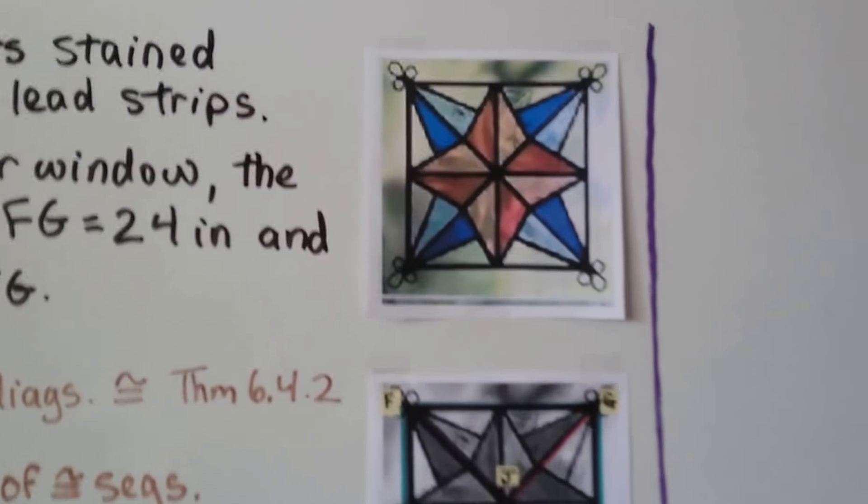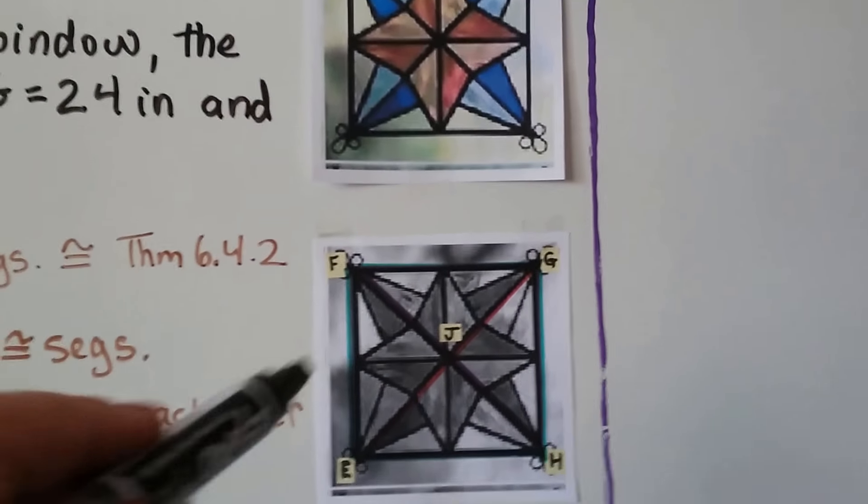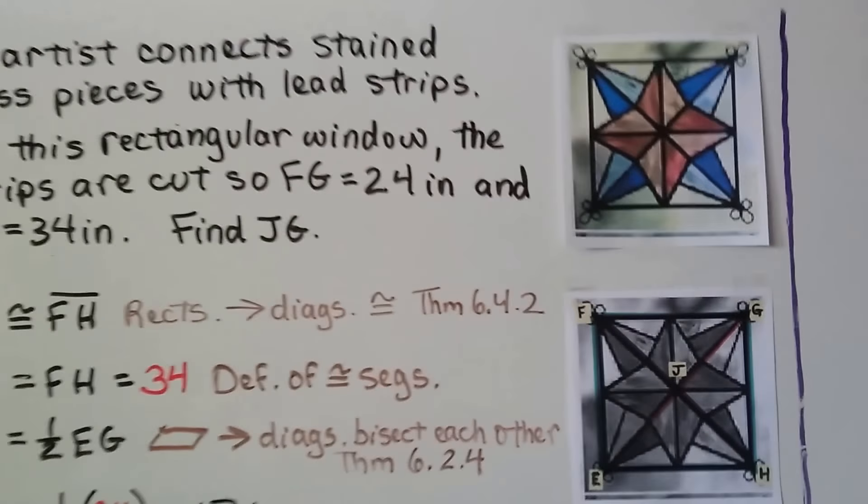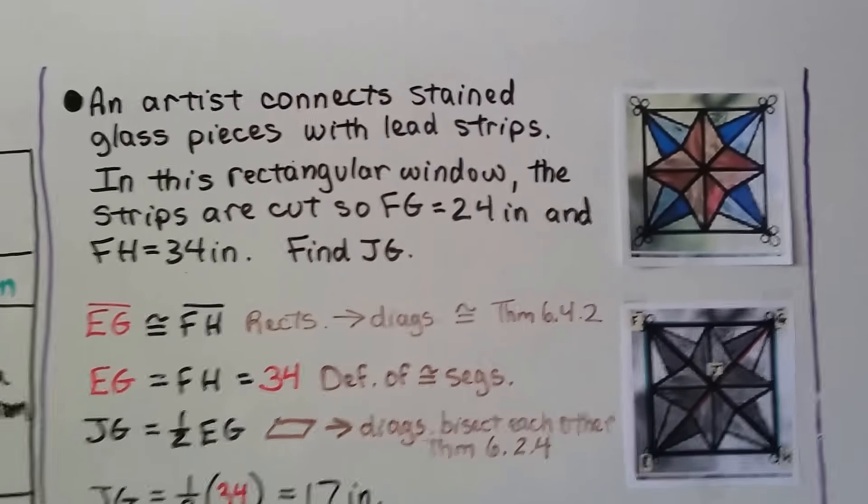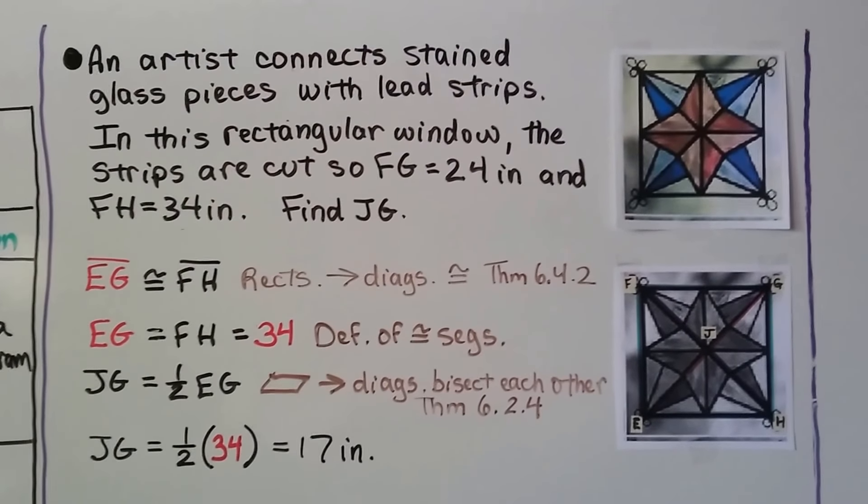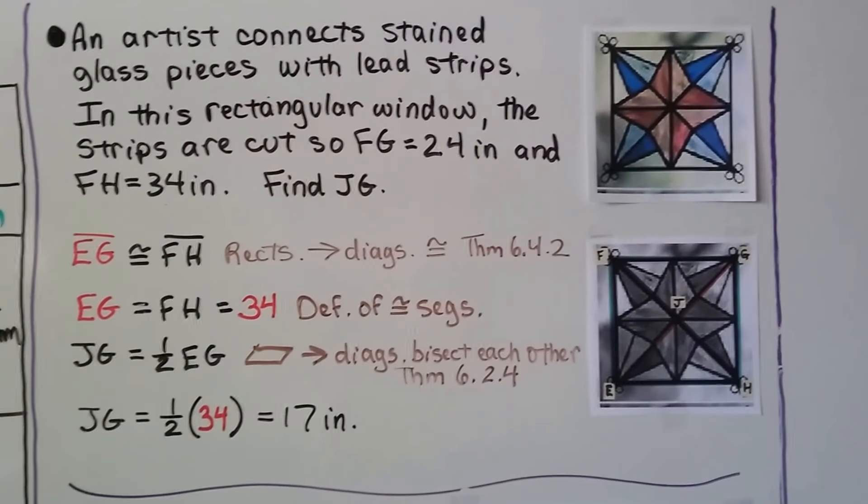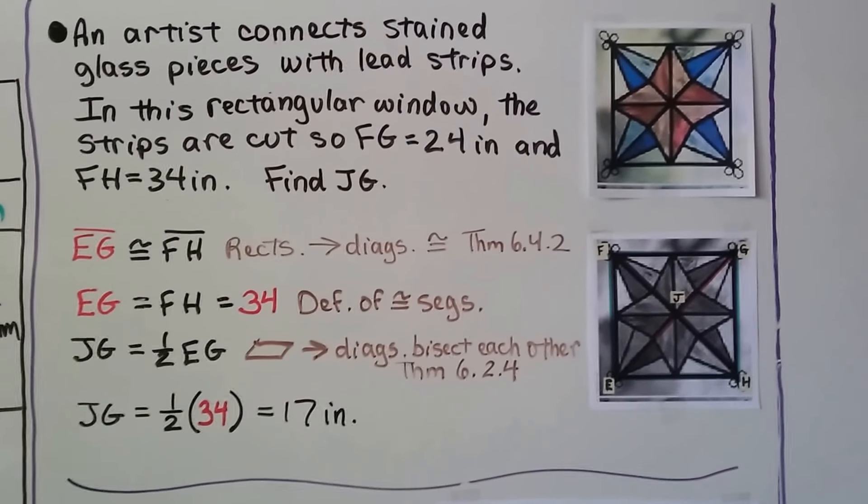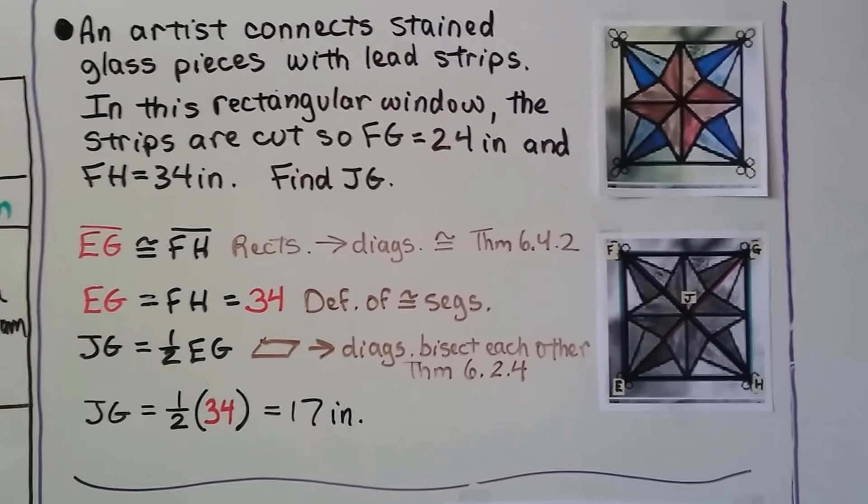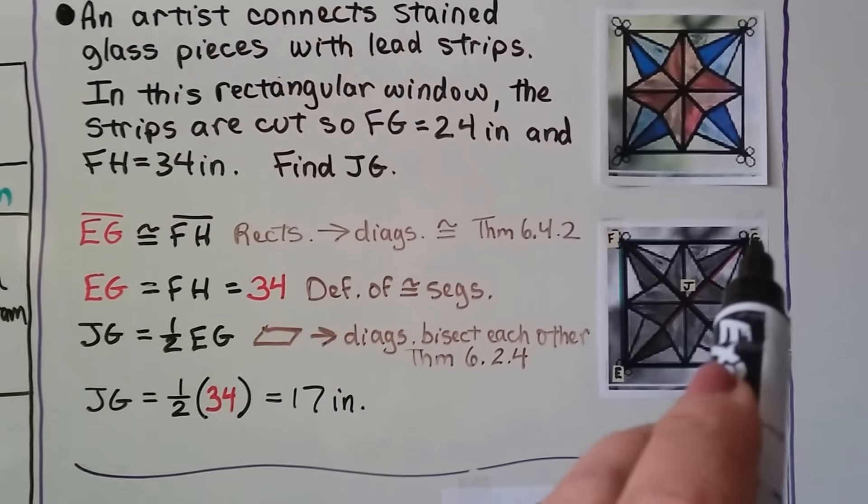Take a look how pretty this is. This is a stained glass window. I printed it in black and white so that you could see my red diagonal. An artist connects stained glass pieces with lead strips. In this rectangular window, the strips are cut so FG is equal to 24 inches and FH, that's the diagonal, is equal to 34 inches. We need to find JG. So that's from the center here up into this corner.